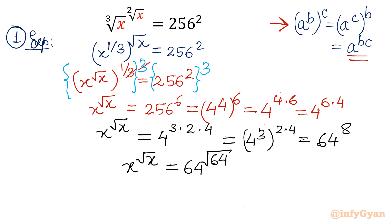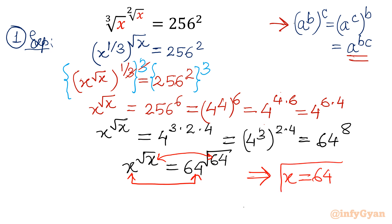Now compare both sides — the base and the exponent. Once I compare, we will conclude that x must be 64. This is using exponents. Now let us come to the logarithm method.